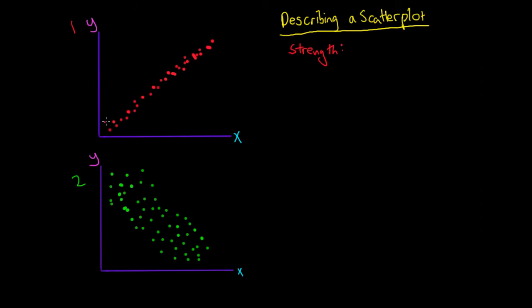So a helpful way to do that is to basically draw lines either side of this scatterplot. And if the lines are really close together, then you can say the relationship is quite strong. Whereas if we look at number 2, if we were to draw these exact same lines down the sides of the plot, we'd say that the lines are really far apart.